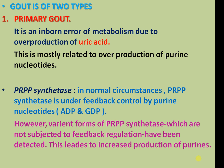Gout is of two types: primary gout and secondary gout. Primary gout is due to inborn errors of metabolism causing overproduction of uric acid. This is mostly related to overproduction of purine nucleotides and PRPP synthase. In normal circumstances, PRPP synthase is under feedback control by purine mononucleotides, ADP and GDP. However, variant forms of PRPP synthase which are not subject to feedback regulation have been detected.